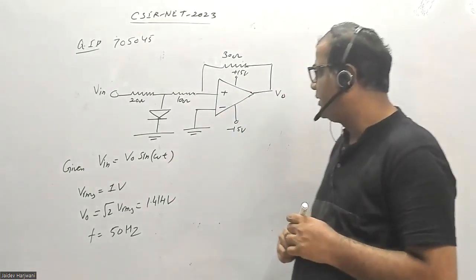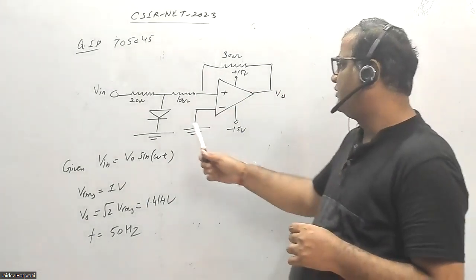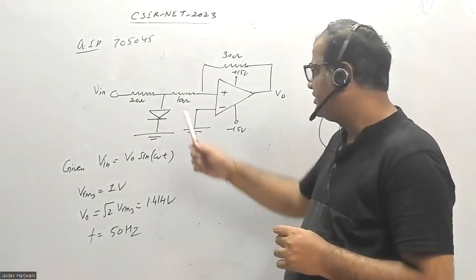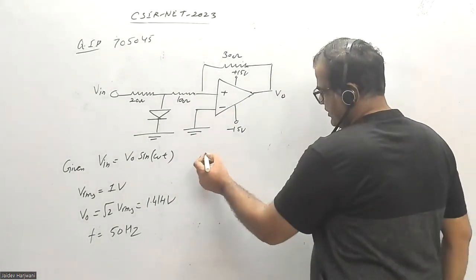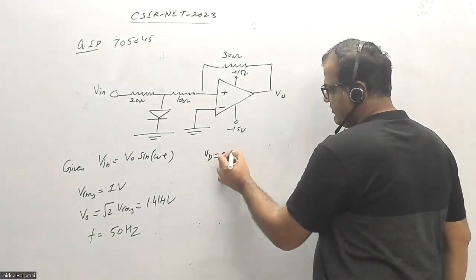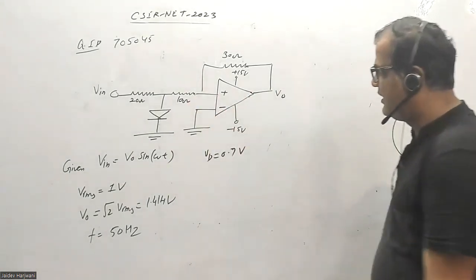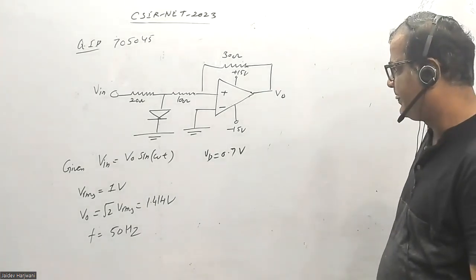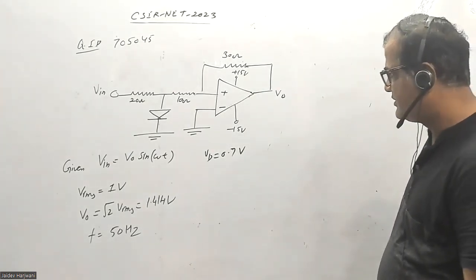In order to make this diode conduct, you need 0.7 volts. It should be 0.7 volt, then only this diode can conduct. In reverse bias there will be zero current, so let us see.